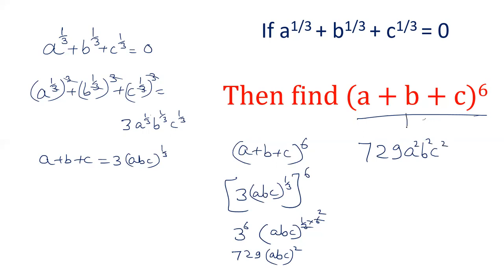This is the answer of (a+b+c)^6 if a^(1/3) + b^(1/3) + c^(1/3) = 0.